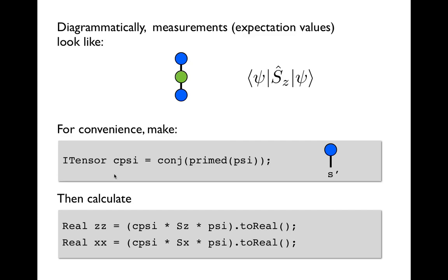And then finally we use the convenience of itensor contraction to calculate the following diagrams. We sandwich the operator Sz in between our bra and our ket and also Sx. And to do this since we've prepared everything ahead of time we simply just star them all together. So we say cpsi star Sz star psi. And we know because we set it up correctly that our diagram has no external lines so it's equal to a scalar.